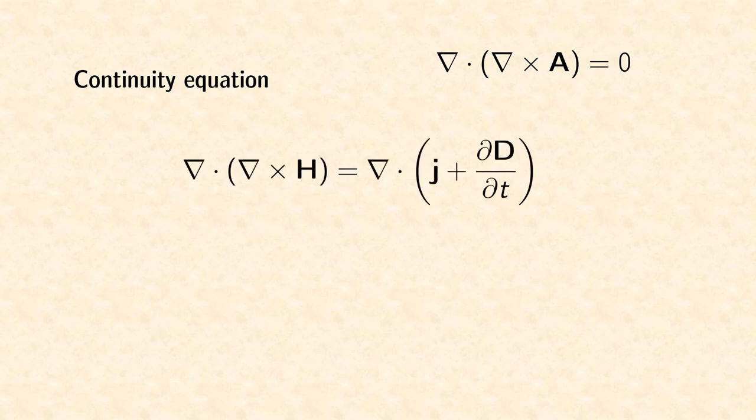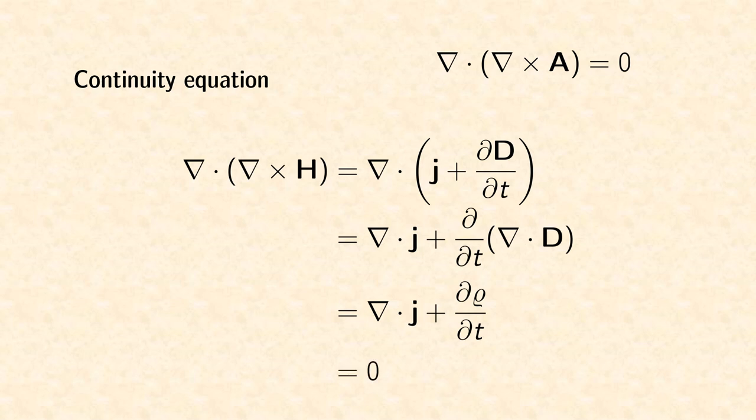When we apply this expression to the magnetic field, we can immediately insert the fourth Maxwell equation. In the next step, we apply the divergence operator to both terms in the parentheses. For this step, it is important that temporal and spatial derivatives commute. Now we insert the first Maxwell equation and we are done.